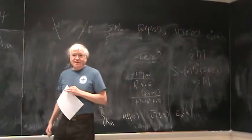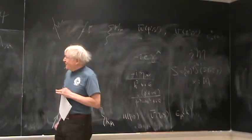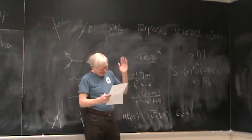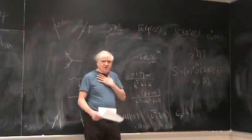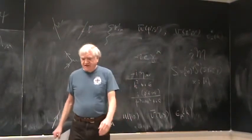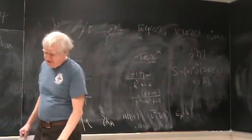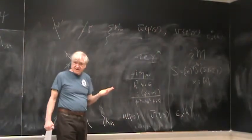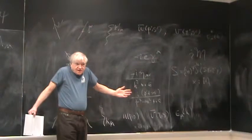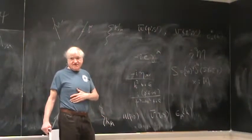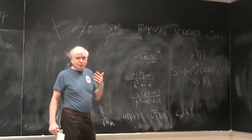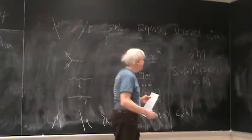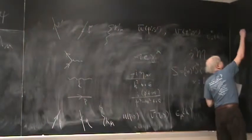So those are the five rules. One of the rules is to watch out for minus signs, and keep track of combinatoric factors — there's no really neat way to do that one. But now we're going to apply these to e-plus e-minus goes to mu-plus mu-minus.